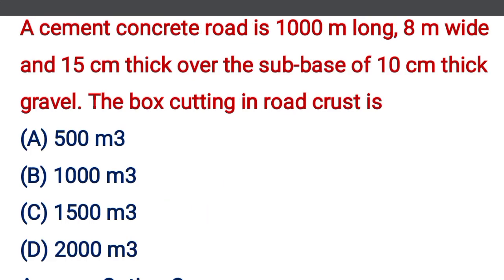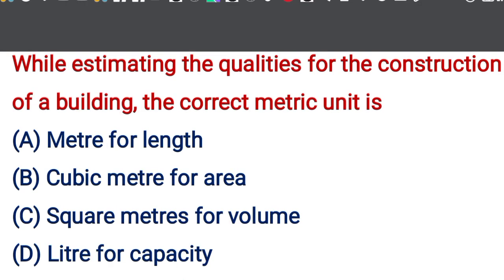A cement concrete road is 1,000 m long, 8 m wide and 15 cm thickness over the subbase of 10 cm thick gravel. The box cutting in the road crust is — option A: 500 m³, option B: 1,000 m³, option C: 1,500 m³, option D: 2,000 m³. The correct answer is option C, 1,500 m³.